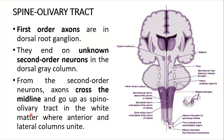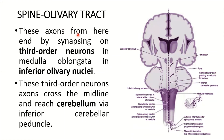The last of these three tracts is the spino-olivary tract. The first-order neurons are in the dorsal root ganglion, and the second-order neurons are in the dorsal gray column. Axons of the second-order neurons cross the midline and ascend as the spino-olivary tract in the white matter where the anterior and lateral columns unite. These axons end by synapsing on third-order neurons in the inferior olivary nucleus in the medulla.